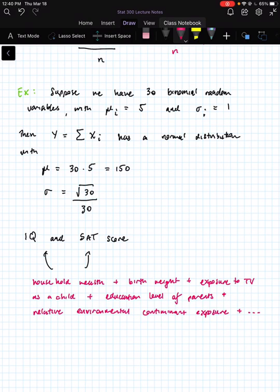So all of these, if we could actually pin down their distributions and think of them as random variables, all of those are going into the calculation of IQ and SAT score and all these purported measurements of intelligence.